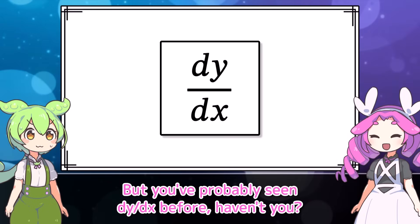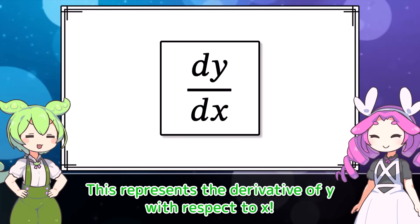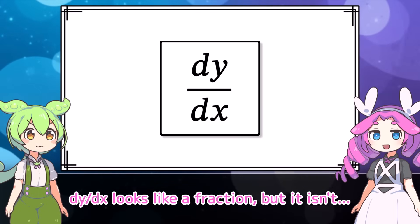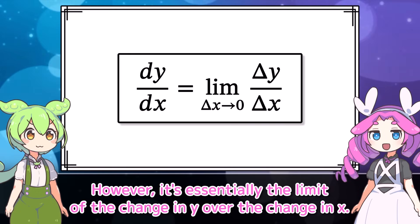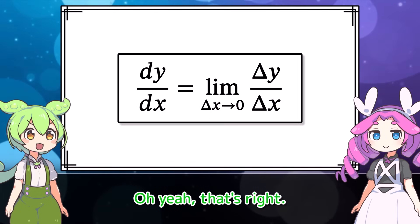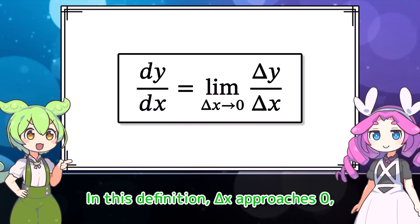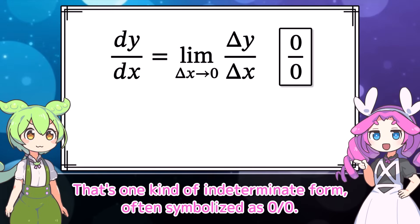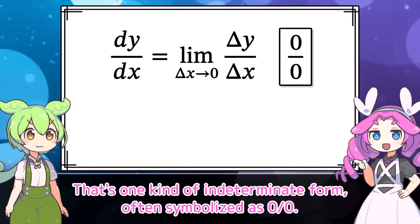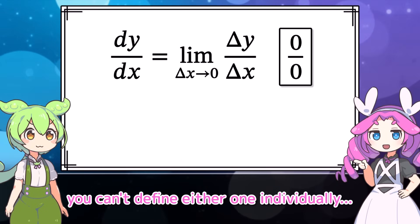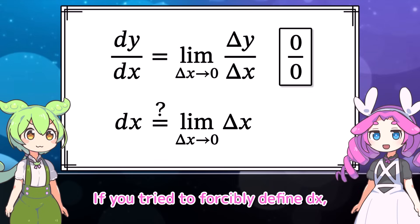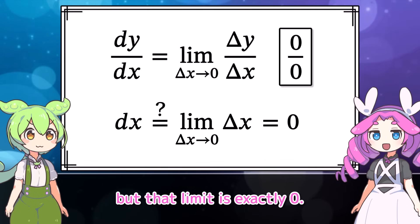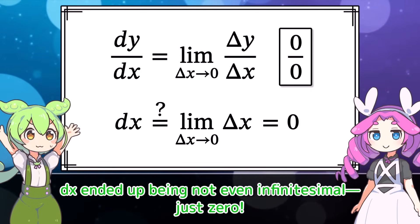But you've probably seen dy by dx before, haven't you? Yeah, this represents the derivative of y with respect to x. dy by dx looks like a fraction, but it isn't. However, it's essentially the limit of the change in y over the change in x. In this definition, delta x approaches 0. So even if the limit exists, both the numerator and the denominator approach 0. That's one kind of indeterminate form, often symbolized as 0 over 0. Since both approach 0, you can't define either one individually. If you tried to forcibly define dx, it would make sense to take it as the limit of delta x. But that limit is exactly 0. dx ended up being not even infinitesimal — just 0.